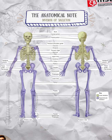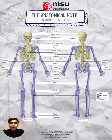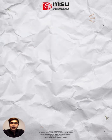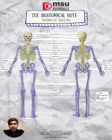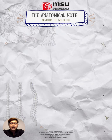Now let's look into the division of the skeleton. The skeleton is divided into two types: the axial and the appendicular. The axial skeleton consists of the bones of the head and trunk. It consists of 80 bones and is composed of six parts: the skull bones, the ossicles of the middle ear, the hyoid bone, the ribcage, the sternum, and the vertebral column.